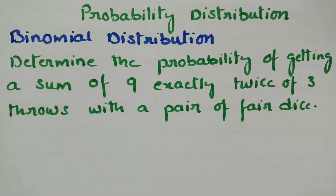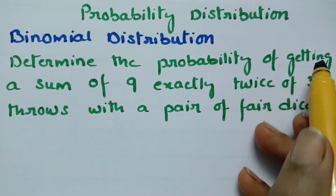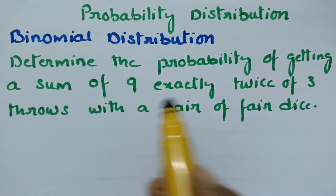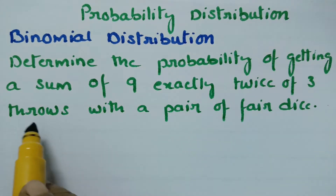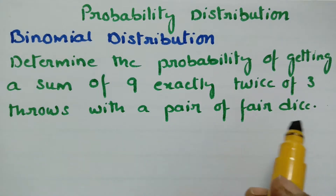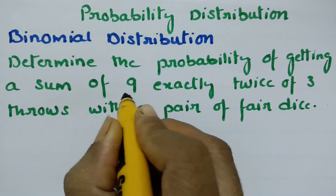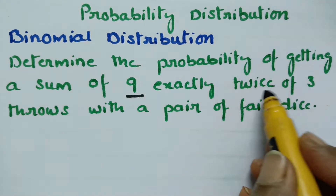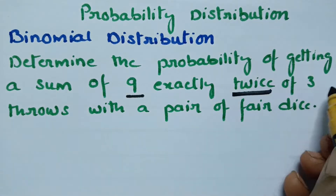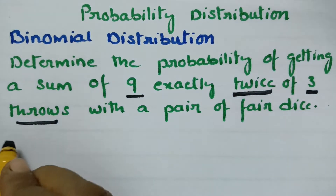Today's video is on binomial distribution. In this video we have to determine the probability of getting a sum of 9 exactly twice in 3 throws with a pair of fair dice. Here, what is given: the probability of getting a sum of 9 exactly twice in 3 throws with a pair of fair dice.